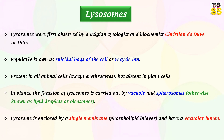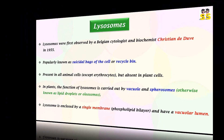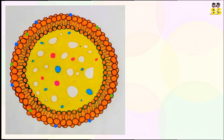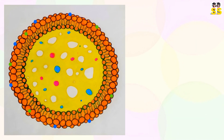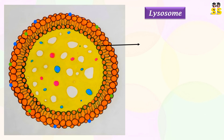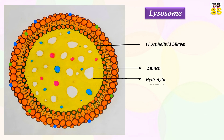The vacuolar lumen of the lysosome is enclosed by a single phospholipid bilayer. This diagram showcases the simple structure of a lysosome. It is a sphere-shaped organelle, enclosed by a single phospholipid bilayer. The area within the membrane is called the vacuolar lumen, which houses about 40 types of hydrolytic enzymes.